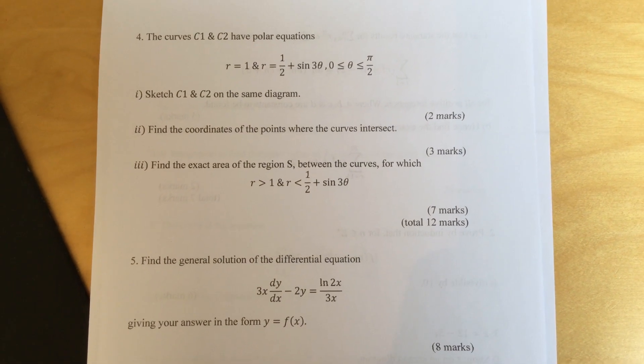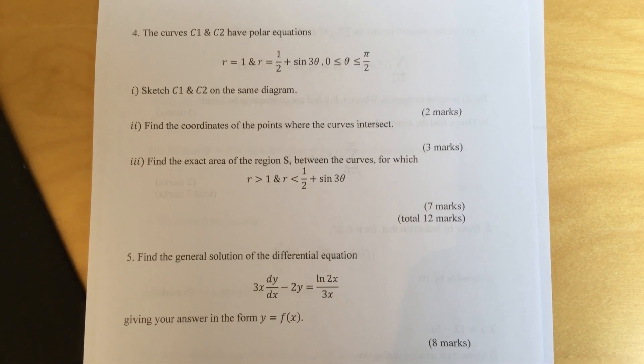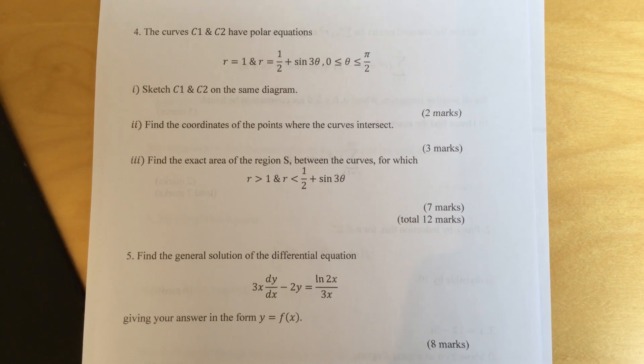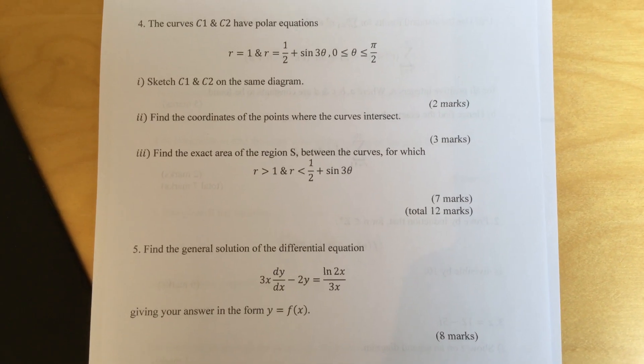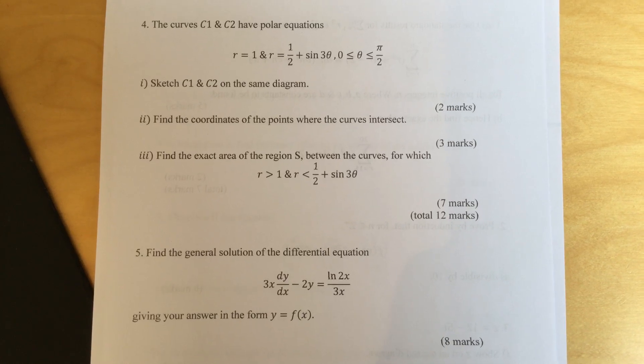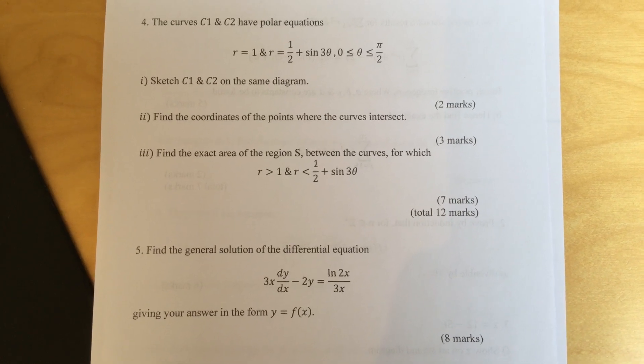Part two, find the coordinates of the points where the curves intersect. Part three, find the exact area of the region S between the curves for which r is greater than 1 and r is less than half plus sine 3θ.